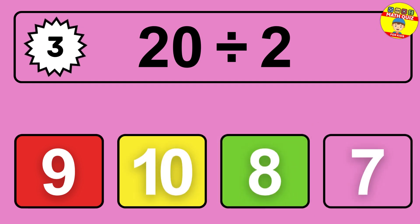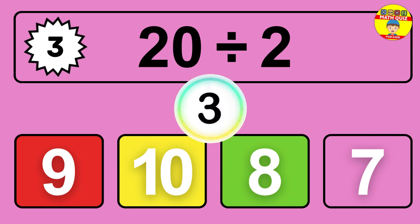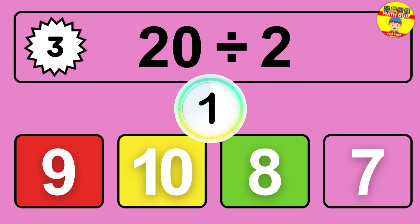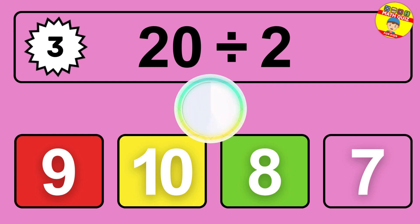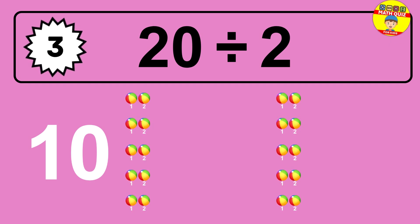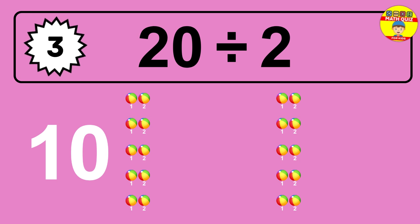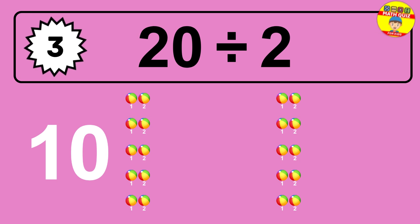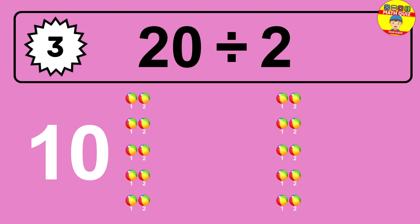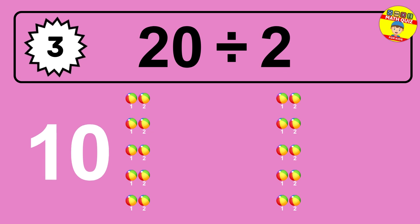What is 20 divided by 2? Picture this: 20 objects to divide into groups of 2. How many groups can you make? Let's think about it. Let's break it down. Let's imagine you have 20 objects. Can you picture them lined up? Now think about splitting them equally into smaller groups of 2.